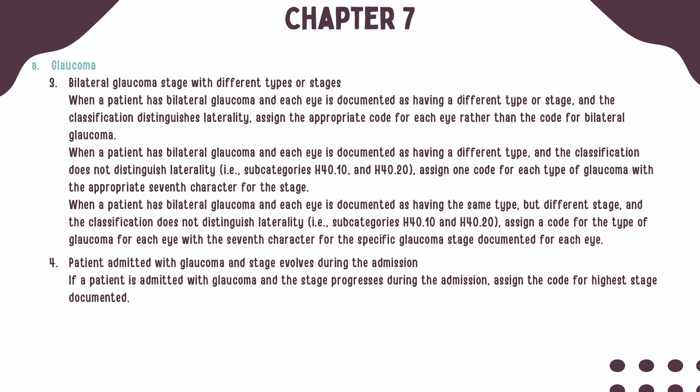When bilateral glaucoma is present and each eye is documented as different stages and laterality is not available within the code set, you should assign a code for the type of glaucoma for each eye with the appropriate seventh character for the stage.